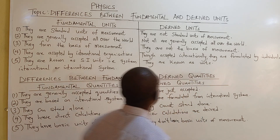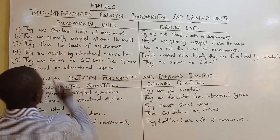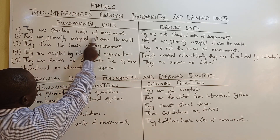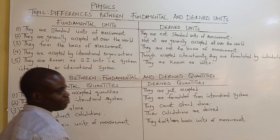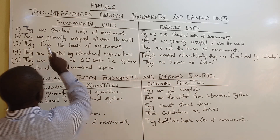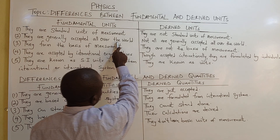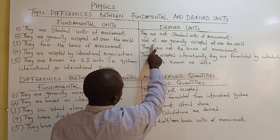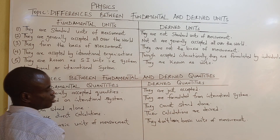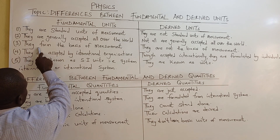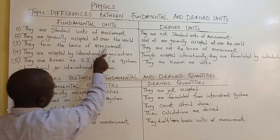Now let's see the differences between fundamental units and derived units. Fundamental units are standard units of measurement, while derived units are non-standard units of measurement. Fundamental units are generally accepted all over the world, whereas derived units are not all generally accepted worldwide. Fundamental units form the basis of measurements.